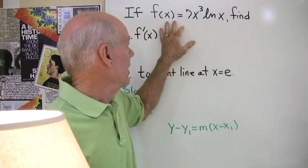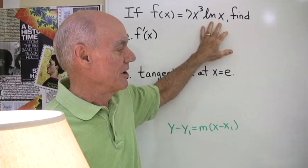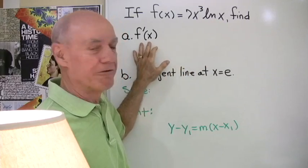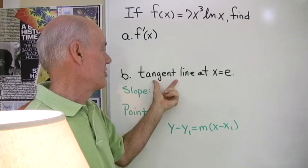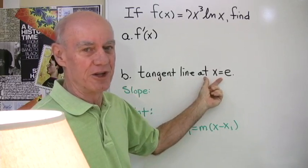Here we have a function f(x) = 7x³ln(x) and we want to find first the derivative of the function and second the tangent line at x equal e.